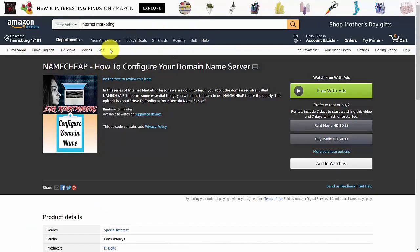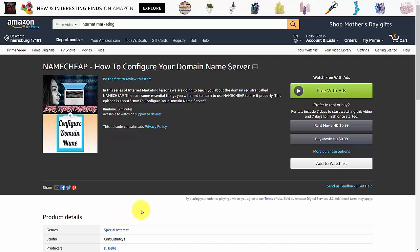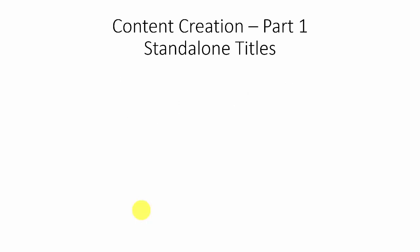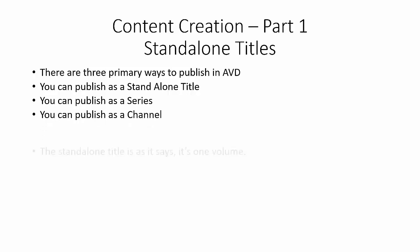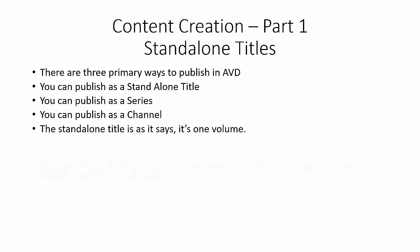You're looking at a video inside of Amazon Video Direct — this is a video all by itself with no seasons attached. This is one of the ways you can create content: a standalone video. There are three primary ways to publish in Amazon Video Direct: as a standalone title, as a series, and as a channel. The standalone title is one volume or one video — you think of it like a featured movie at a theater.